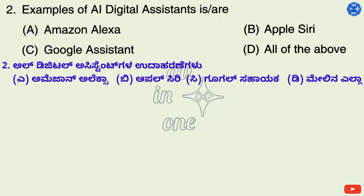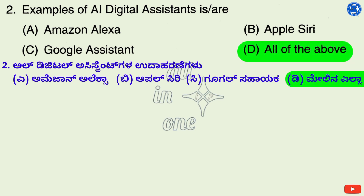Examples of AI digital assistants: Options: A. Amazon Alexa, B. Apple Siri, C. Google Assistant, D. All of the above. Right answer is D: All of the above.